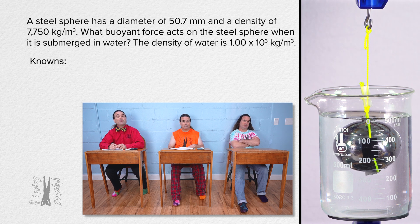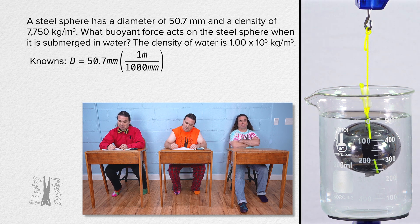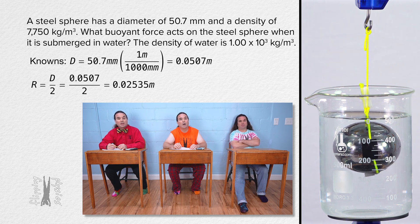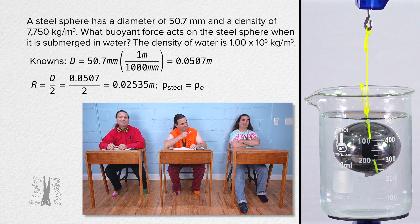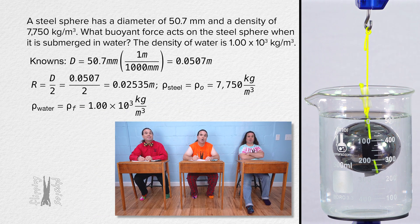Our knowns are the diameter, which equals 50.7 millimeters, which we multiply by one meter over a thousand millimeters to get 0.0507 meters. But what we really need is the radius, which is half the diameter or 0.02535 meters. Let's label the density of steel as the density of the object, which equals 7,750 kilograms per cubic meter. And the density of water, which is the density of the fluid displaced by the object, is 1.00 times 10 to the third kilograms per cubic meter. And buoyant force equals question mark.